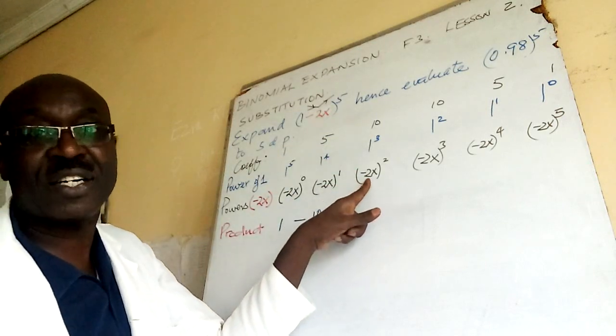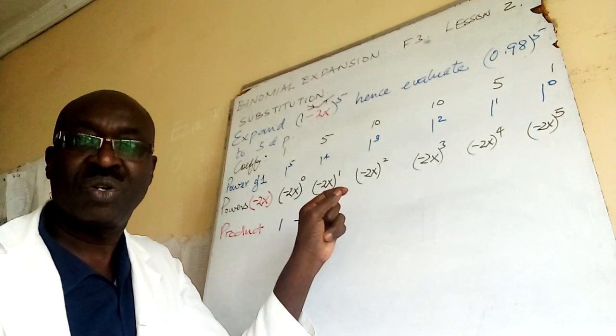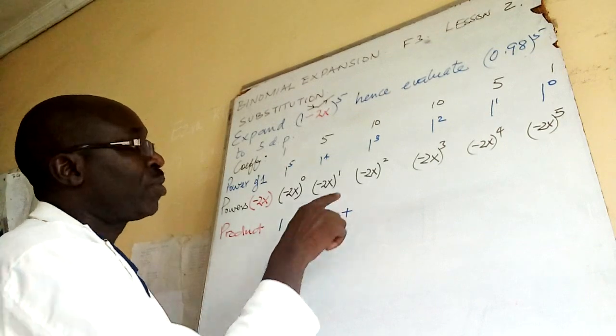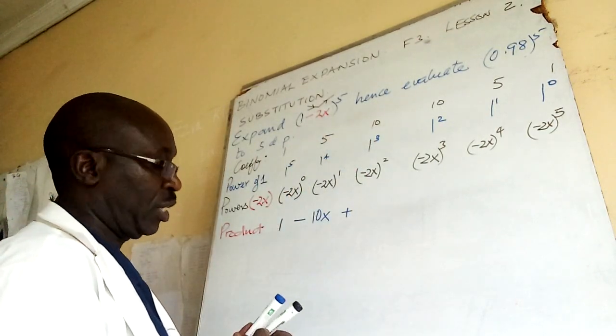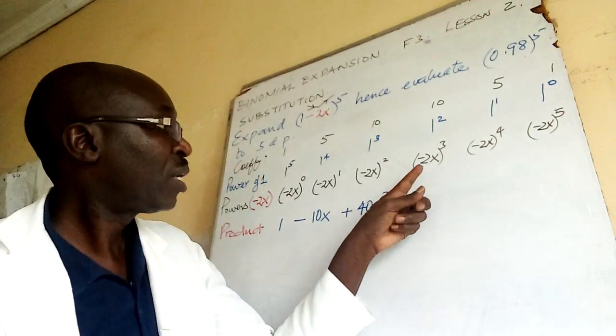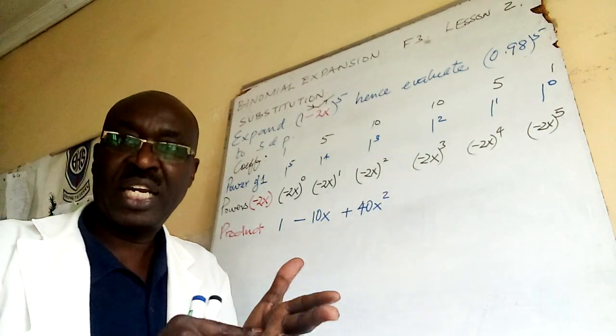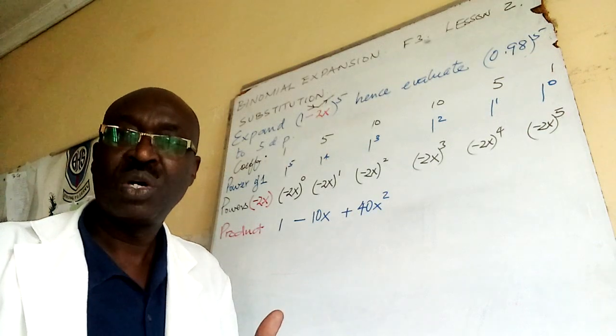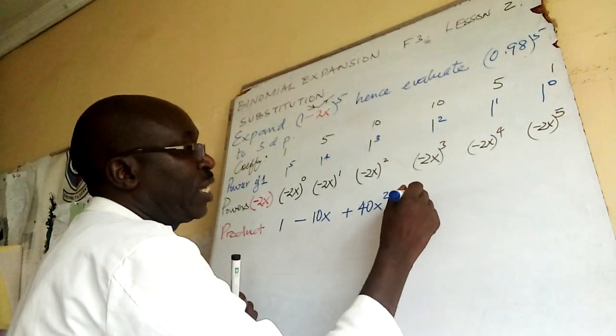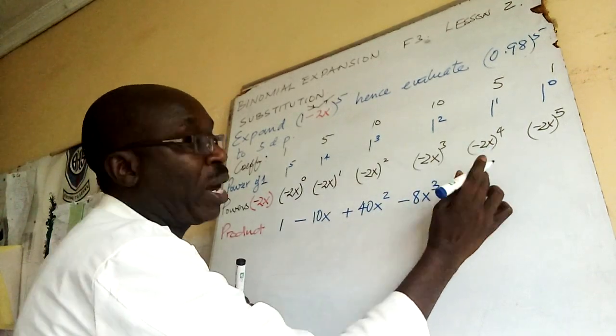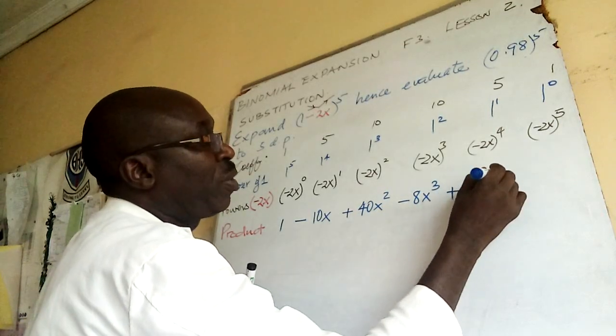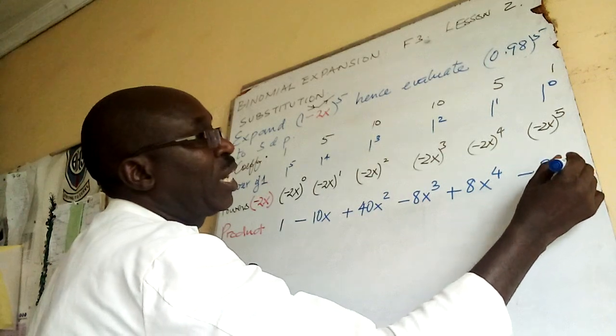Can we try this? Negative 2 squared is positive 4, so I put positive, then what next? 4 times 10 is 40, so I put my 40, then x squared. This is negative 2 to power 3: negative 2 times negative 2 times negative 2 is negative 8, so I put minus 80x cubed. This is even power, automatically it will be plus 80x to power 4, and then minus 32x to power 5.